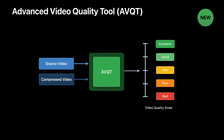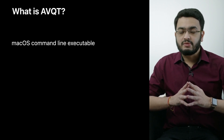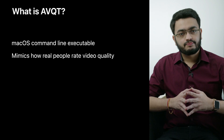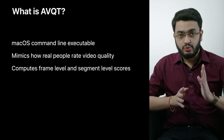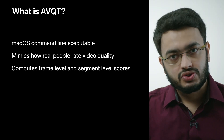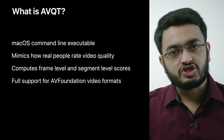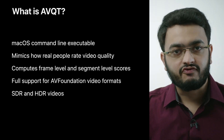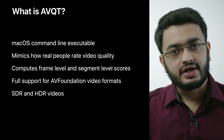We are very excited to enable our developers with such a perceptual video quality tool. We are calling it the Advanced Video Quality Tool, or AVQT in short. AVQT comes as a macOS command line executable and attempts to mimic how real people rate quality of compressed videos. You can use AVQT to compute both frame level and segment level scores, where a segment is typically a few seconds long. We have added support for all AV Foundation-based video formats, including HDR video formats such as HDR10, HLG, and Dolby Vision.